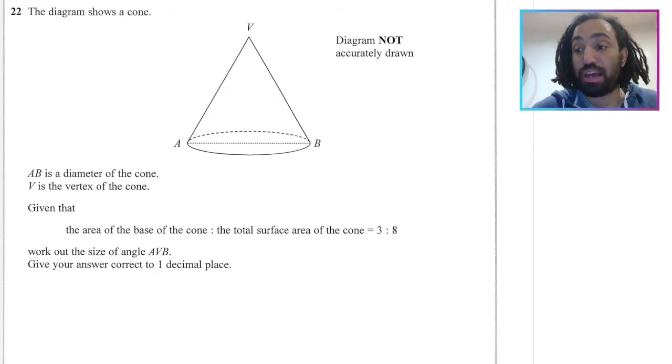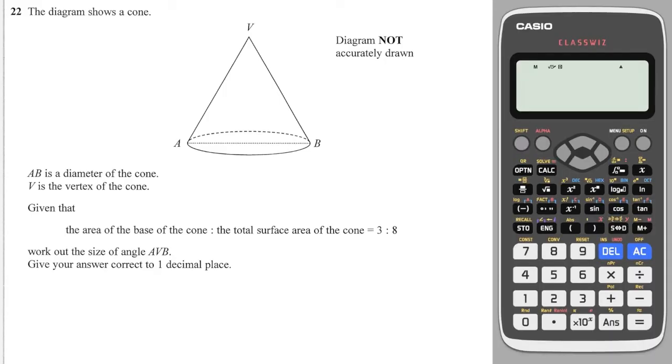Right, let's get into the maths. We have a cone and we are told that the area of the base of the cone to the total surface area of the cone is 3 to 8. So I am going to start by writing out the area of the base of the cone, which is a circle, which will be πr².